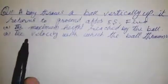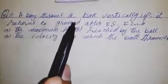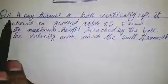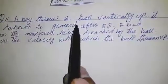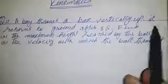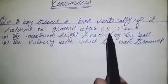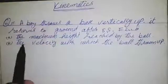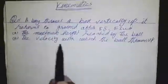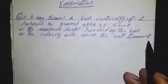Bismillahirrahmanirrahim, today we are going to solve a problem from kinematics from 9th grade. A boy throws a ball vertically up. It returns to the ground after 5 seconds. Find the maximum height reached by the ball and the velocity with which the ball was thrown up.